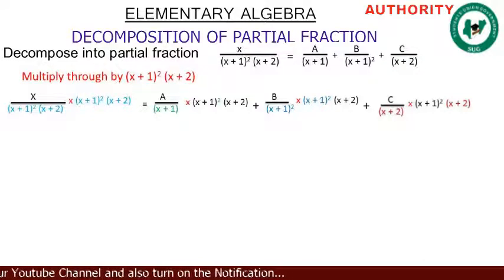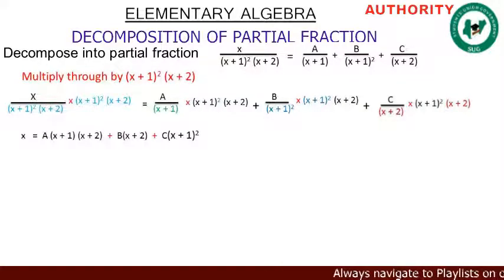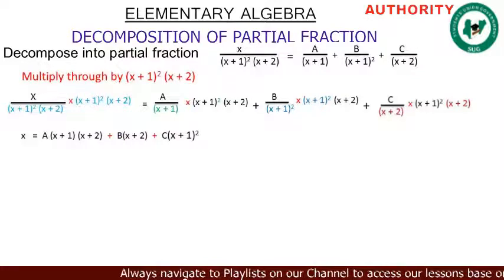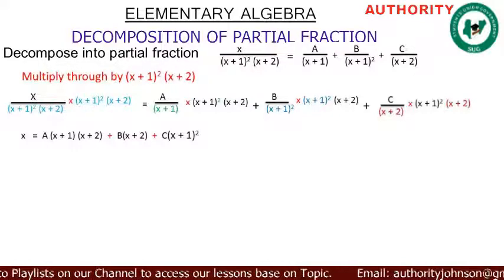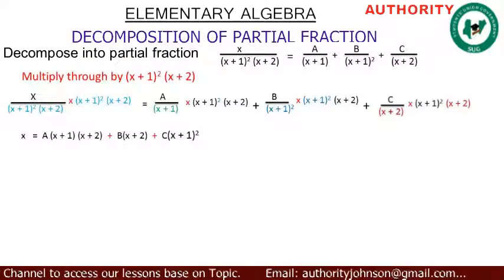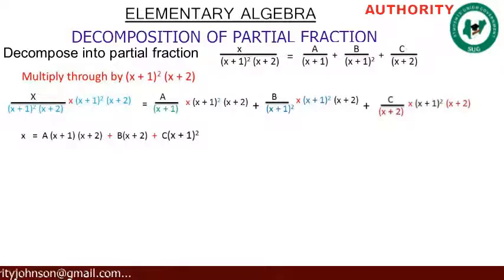On the A side, (x+1) cancels one of the (x+1) squared, leaving one (x+1) and (x+2). On the B side, (x+1) squared cancels (x+1) squared, leaving B times (x+2). On the C side, (x+2) cancels (x+2), leaving C times (x+1) squared.